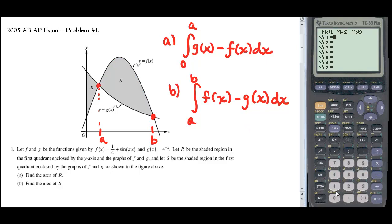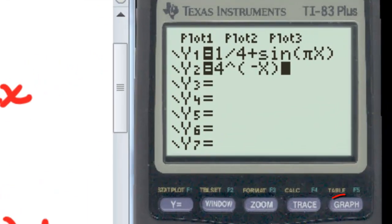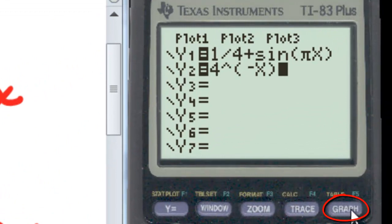We could do these in separate integrals, but let's just save some time and be a bit more efficient. In my Y equals, I'm going to type in my first function, my F function, which is one-fourth sine of pi X. And then in Y2, I'm going to type in the G function, which is four raised to the negative X. I'm going to take a look at the graphs we get from those two. I'm going to hit graph.